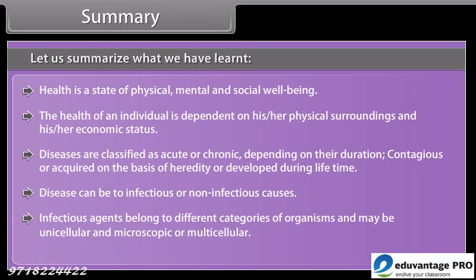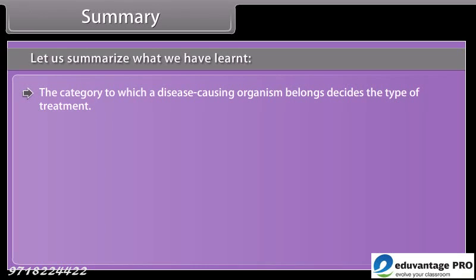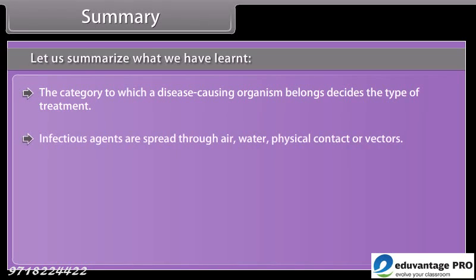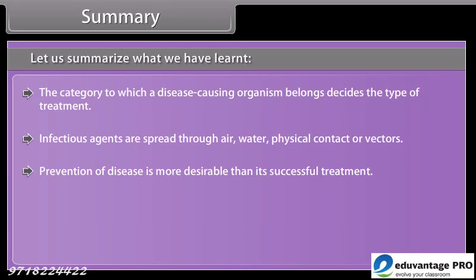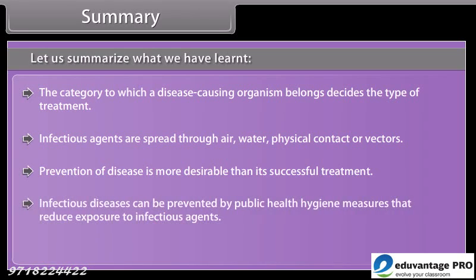Disease can be from infectious or non-infectious causes. Infectious agents belong to different categories of organisms and may be unicellular and microscopic or multicellular. The category to which a disease-causing organism belongs decides the type of treatment. Infectious agents are spread through air, water, physical contact or vectors. Prevention of disease is more desirable than its successful treatment. Infectious diseases can be prevented by public health hygiene measures that reduce exposure to infectious agents.